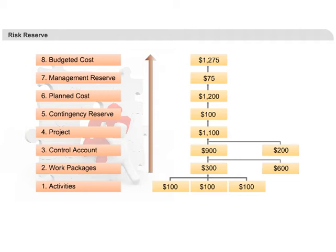Costs are managed at the control account level. When I say cost is managed at the control account level, it means how much was planned for work packages within that control account, how much is actually spent, and so on, are accounted for at that level. As you can see, first the cost of all activities add up to the cost of the work packages, and work packages cost add up to the control account cost.